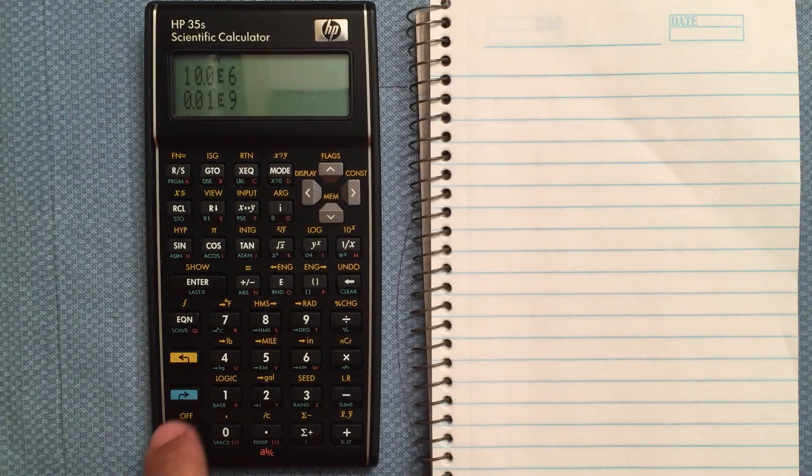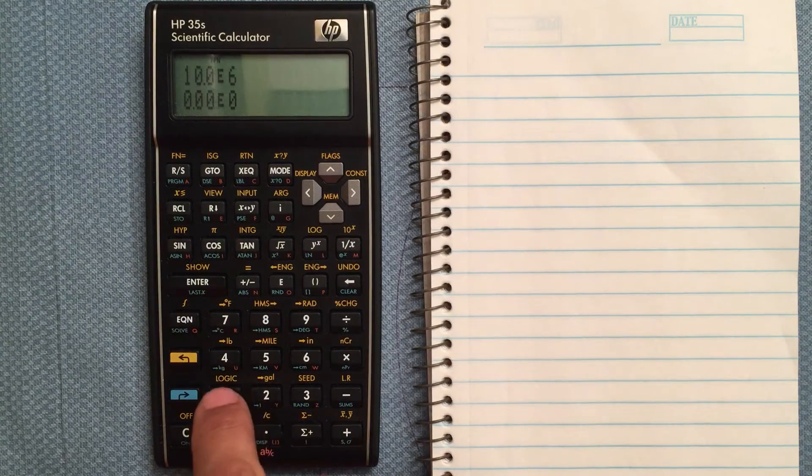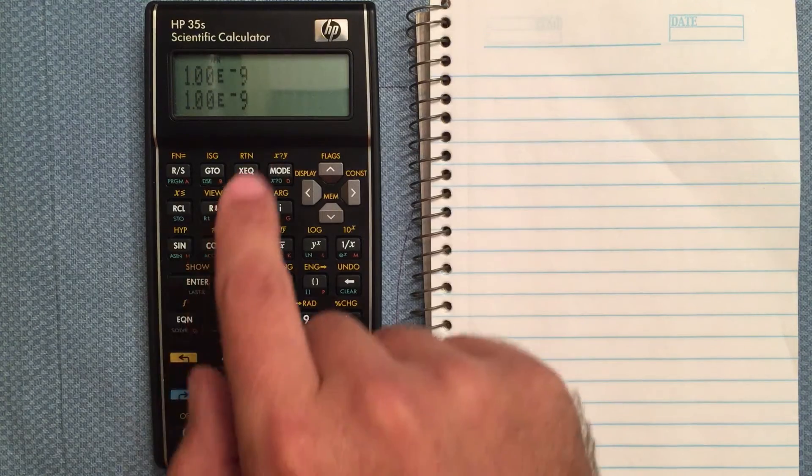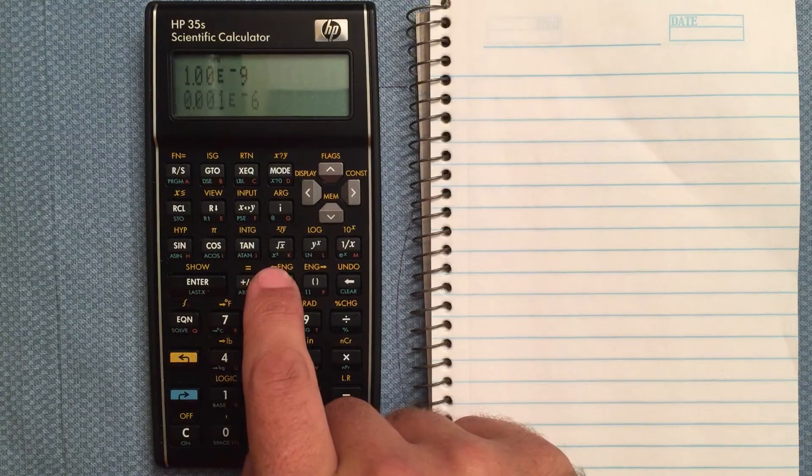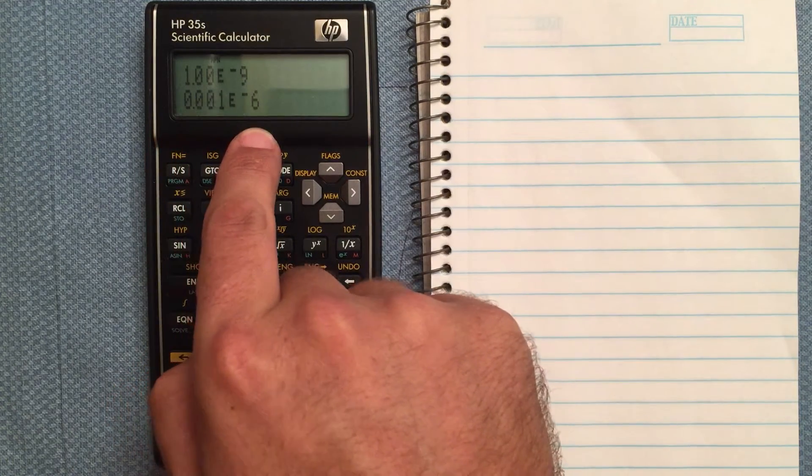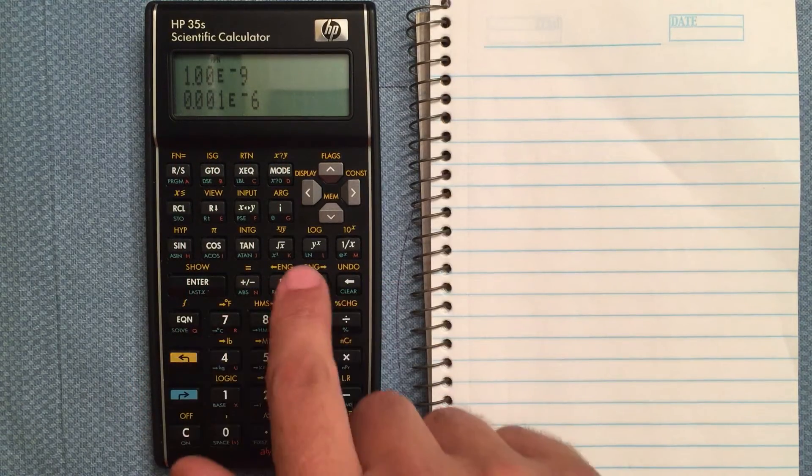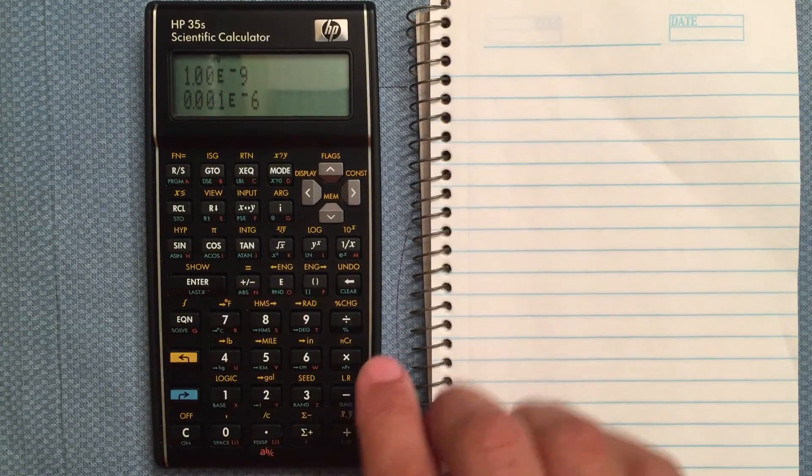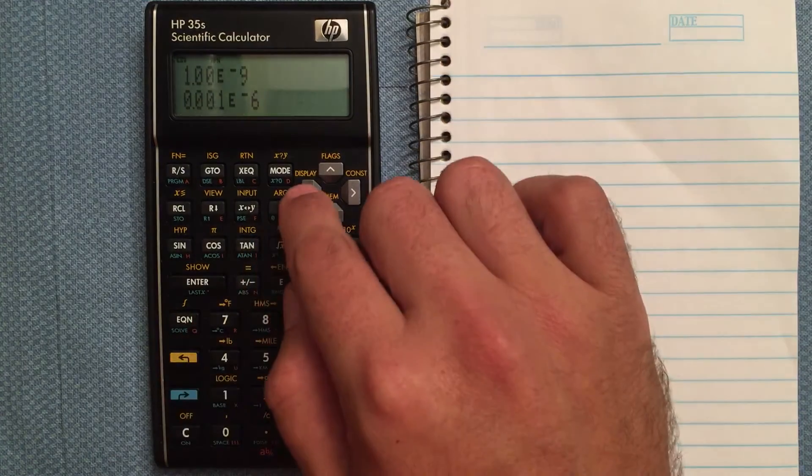Say for example, I have a capacitor that is 1 nanofarad. So 1e to the negative 9. And I want to see how many microfarads that is. Well, I can do a shift here. And that's .001 times 10 to the negative 6 or .001 microfarads. So just a quick way of being able to switch the power times 10 to the exponent place. Alright, back to the display menu.